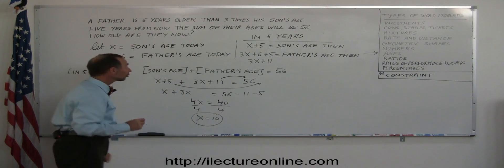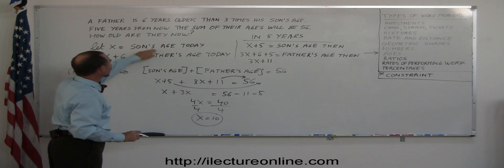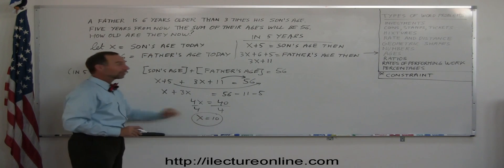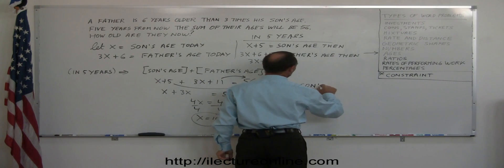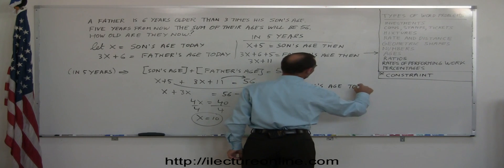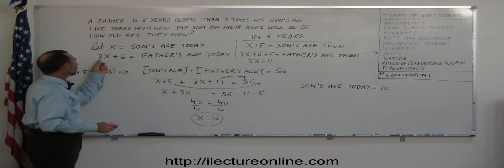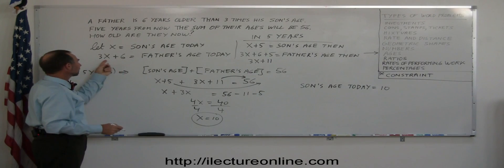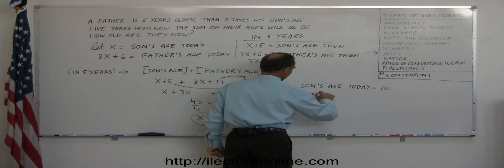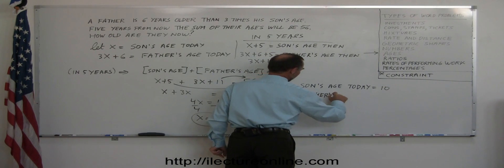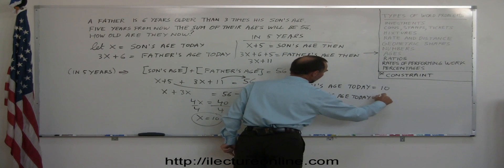Now since we defined the ages so carefully in terms of X, we see here that X represents the son's age today. So X is the age of the son today. Son's age today is equal to 10. And the father, it's 3X plus 6. So 3 times 10 is 30 plus 6 is 36. So father's age today is 36.